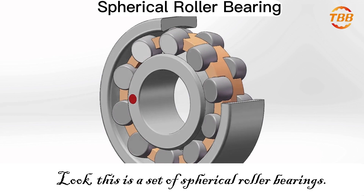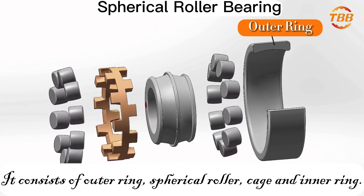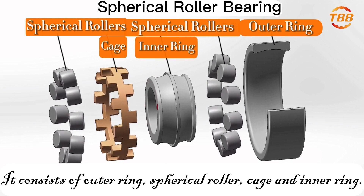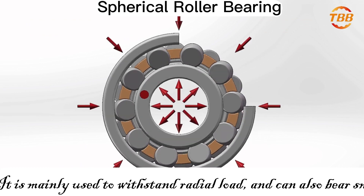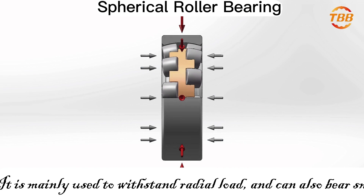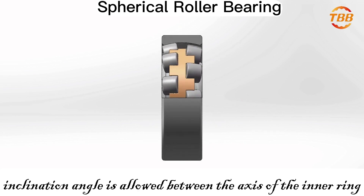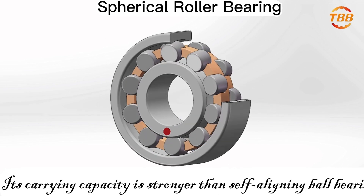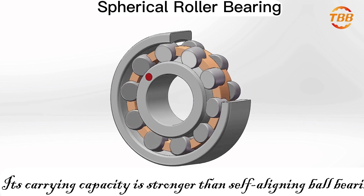This is a set of spherical roller bearings. It consists of outer ring, spherical roller, cage, and inner ring. It is mainly used to withstand radial load and can also bear small axial load. A certain inclination angle is allowed between the axis of the inner ring and the axis of the outer ring. Its carrying capacity is stronger than self-aligning ball bearings.